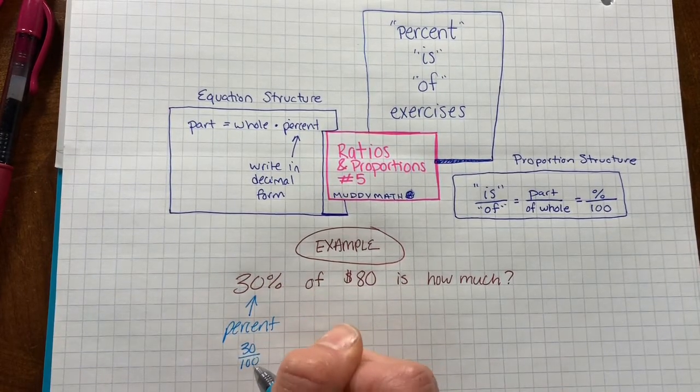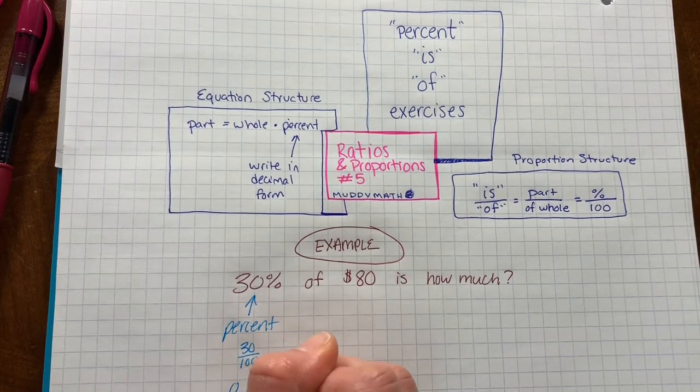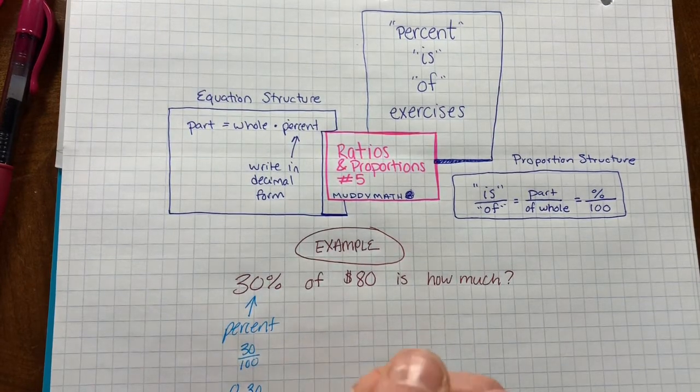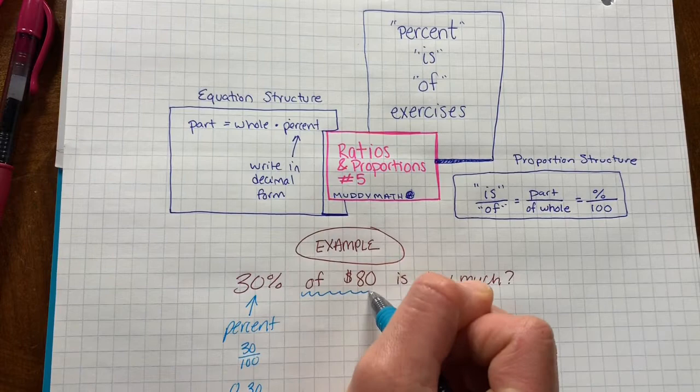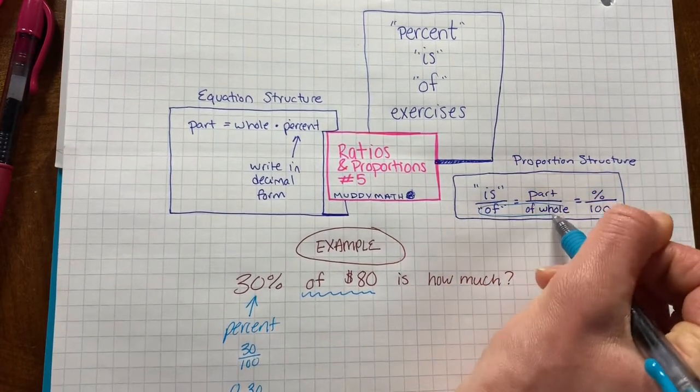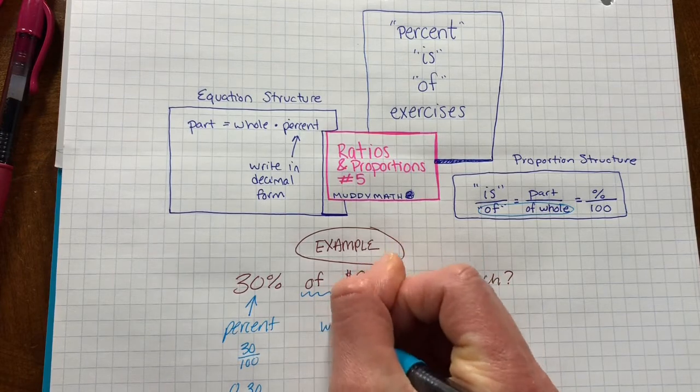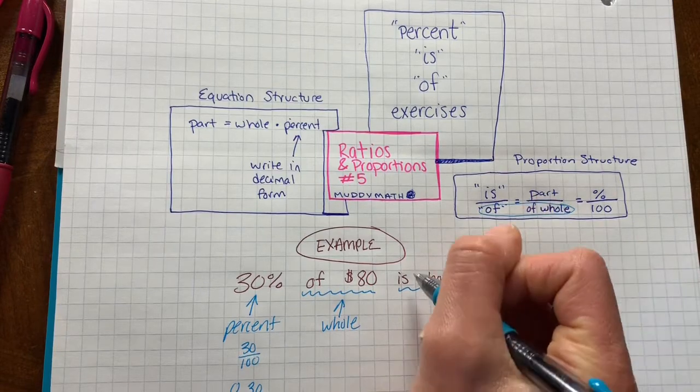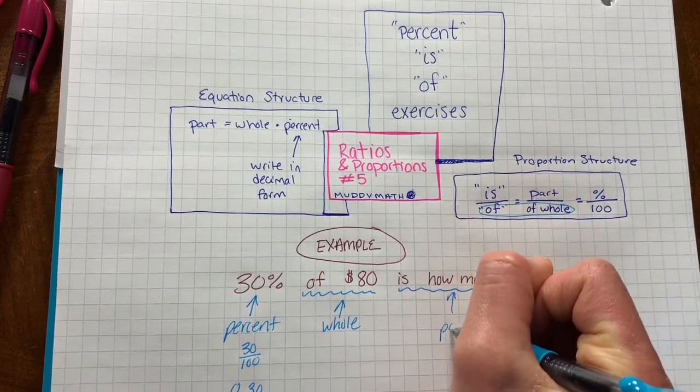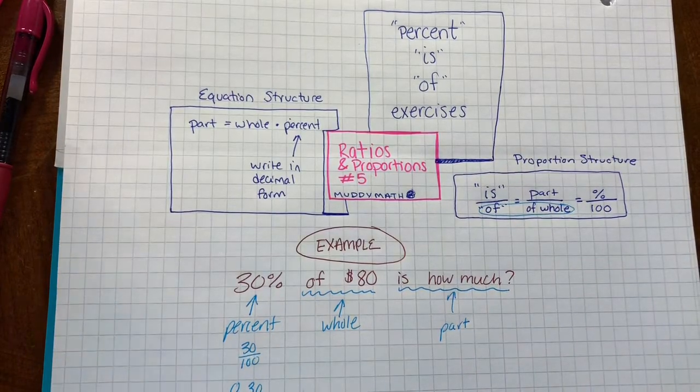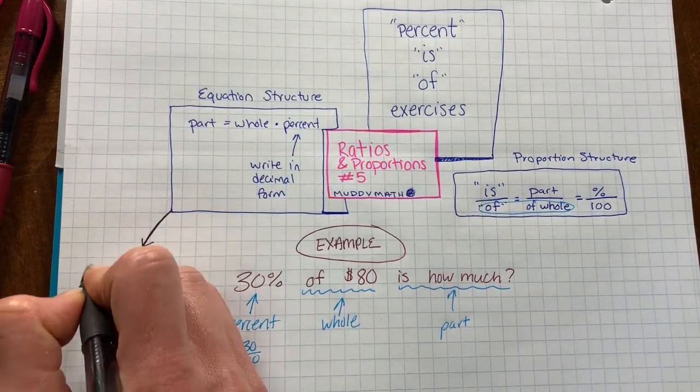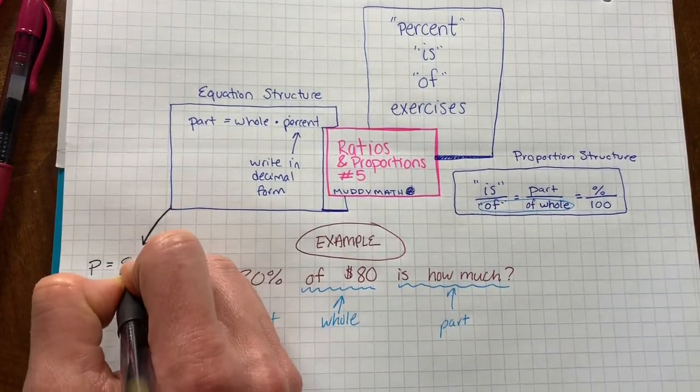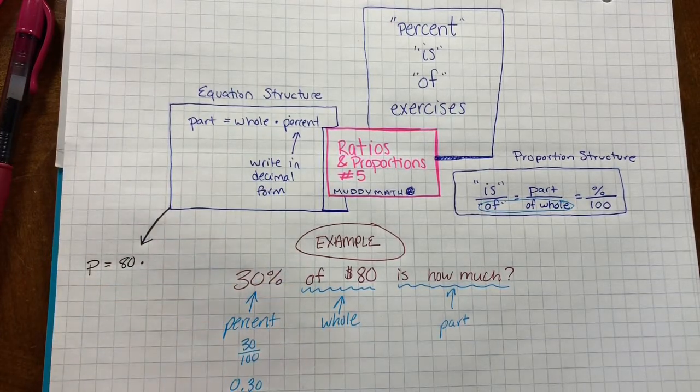The percent as a fraction is 30 over 100 and as a decimal is 30 hundredths, or 3 tenths. Of $80 - of relates to the whole. Is how much? The question is related to the word is, so we don't know the part. The part is missing, so I can use p to represent the missing part, equals the whole, which is 80, times the percent as a decimal.